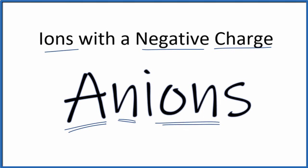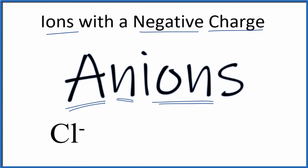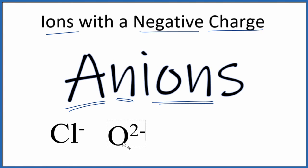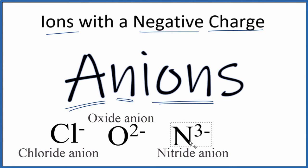For example, we might have Cl⁻, oxygen with a 2⁻ charge, and nitrogen with a 3⁻ charge. These are all anions because they have a negative charge.